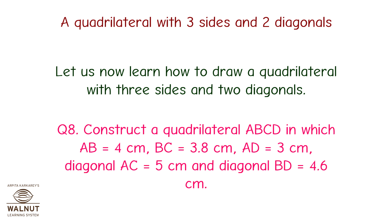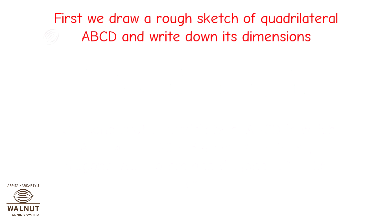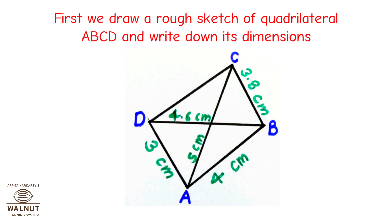Construct a Quadrilateral ABCD in which AB is equal to 4 cm, BC is equal to 3.8 cm, AD is equal to 3 cm, diagonal AC is equal to 5 cm, and diagonal BD is equal to 4.6 cm. First, we draw a rough sketch of Quadrilateral ABCD and write down its dimensions.